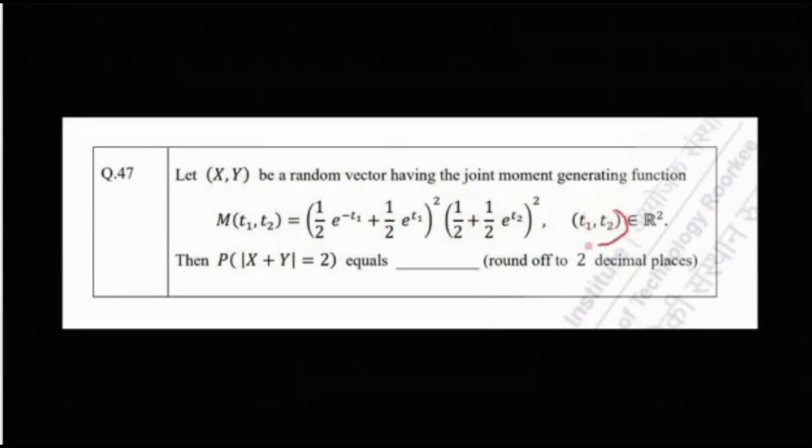The problem says: let (X, Y) be a random vector having the joint moment generating function M(t1, t2) = (1/2 · e^(−t1) + 1/2 · e^(t1))² · (1/2 + 1/2 · e^(t2))², where (t1, t2) ∈ ℝ². We need to calculate the probability P(|X + Y| = 2). The joint MGF is given and we need to find this probability.